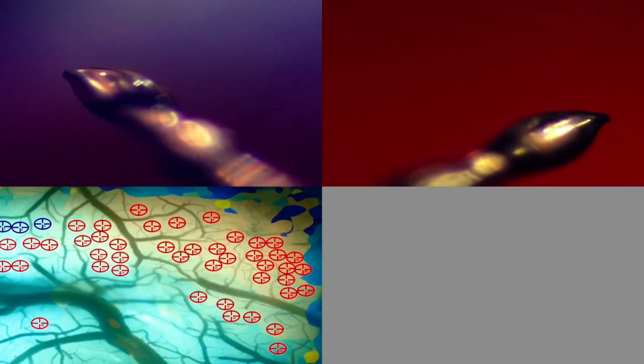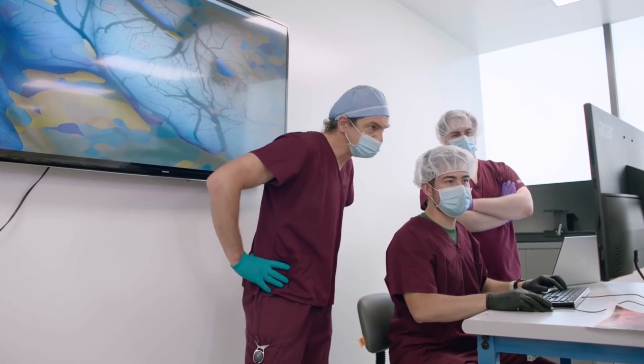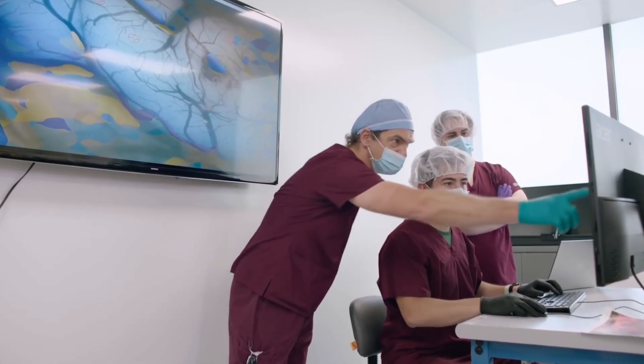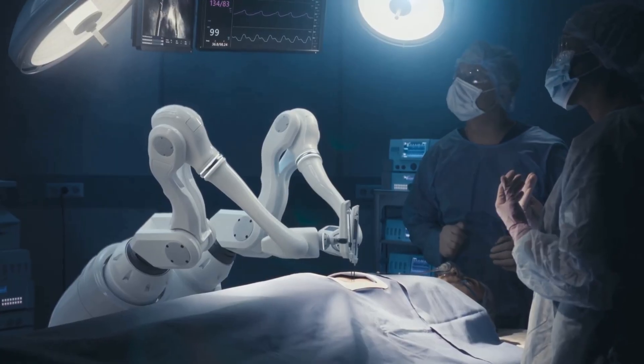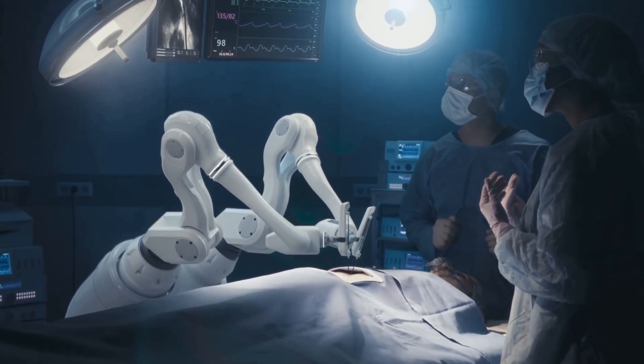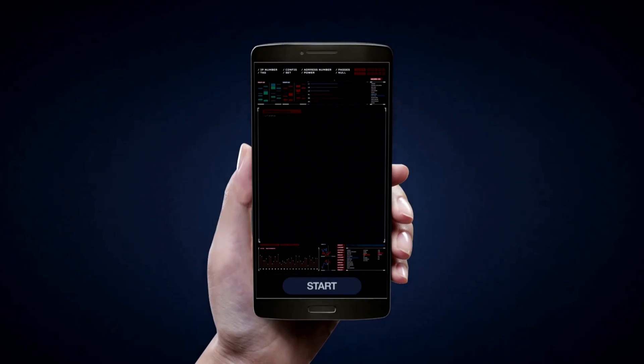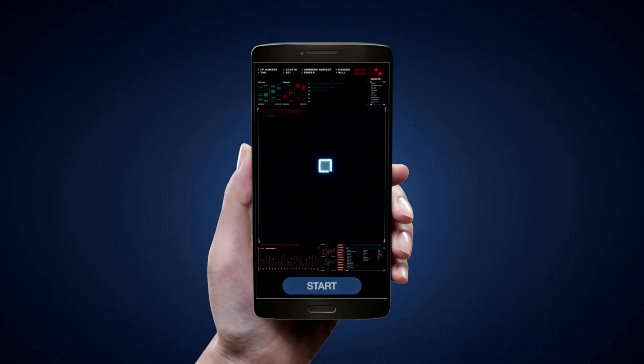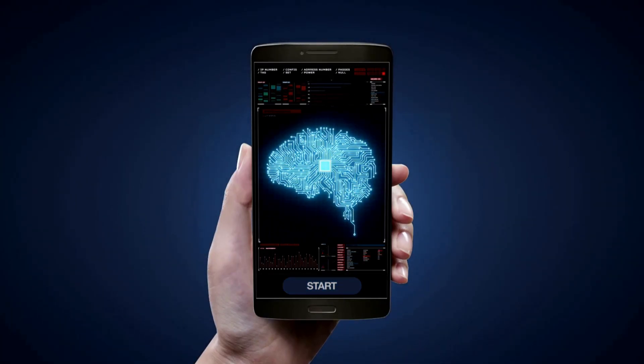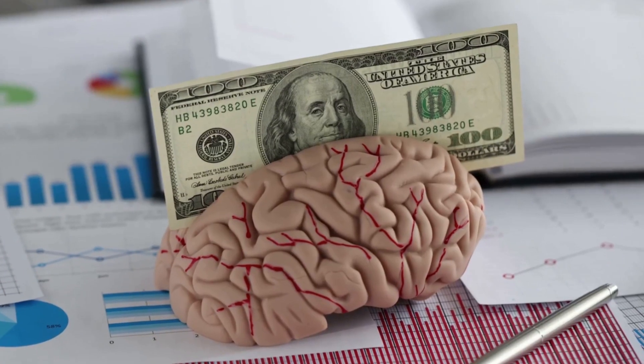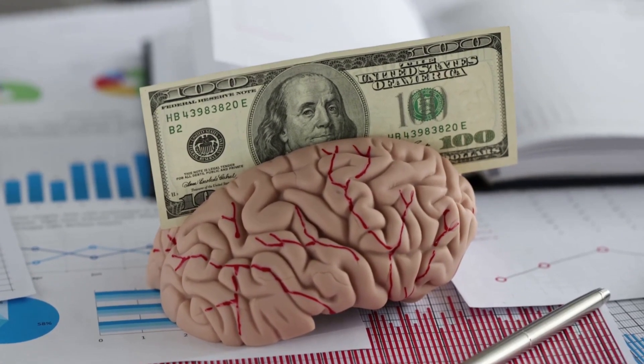However, the road ahead is not without its challenges. The medical community will be watching closely to ensure that Neuralink maintains the highest standards of safety and ethics, particularly given the concerns raised about the company's transparency and private equity model. Failure to do so could result in regulatory roadblocks and loss of public trust. Additionally, Neuralink will need to address concerns about equitable access to its technology.